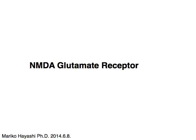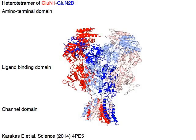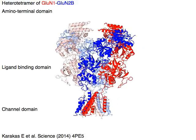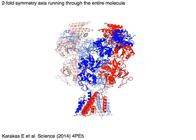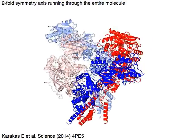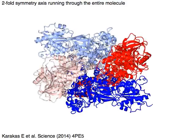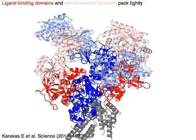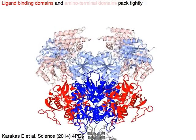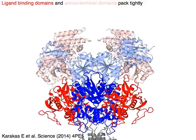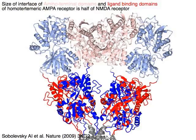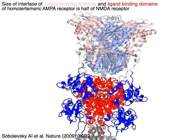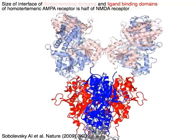The NMDA glutamate receptor has GluN1 in red and GluN2B in blue. A two-fold symmetry axis runs through the entire molecule. Ligand binding domains are shown in light colors and amino terminal domains in solid colors, packed tightly. The interface of the amino terminal domains and ligand binding domains is shown in light and solid colors respectively.